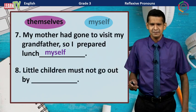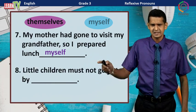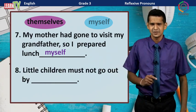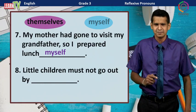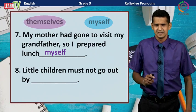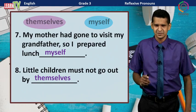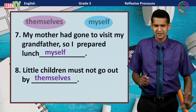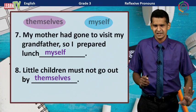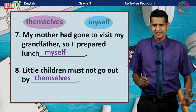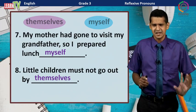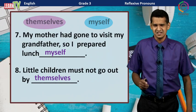Number eight: Little children must not go out by ___. The answer is 'themselves.' They should not go out alone. We use 'by plus reflexive pronoun' to say that something is done by someone alone.